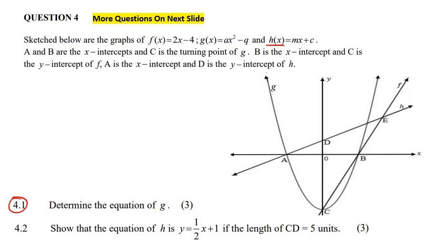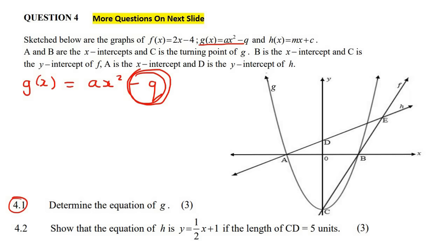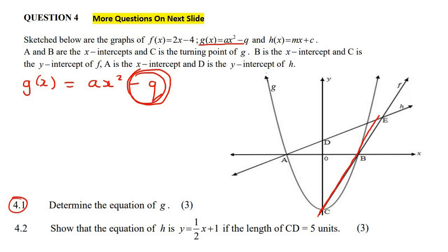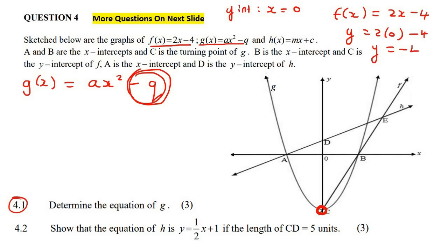Now they have the first question for three marks: determine the equation of G. So G is the parabola. They give us G's equation: G of X is equal to AX squared minus q. Now remember that this number q is determined by where this parabola cuts the Y-axis. That would be the same place where the straight line of F cuts the Y-axis, and we know F's equation. So to find the Y-intercept, we make X equal to zero, and we get minus four.